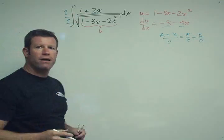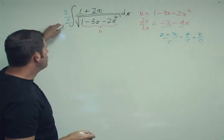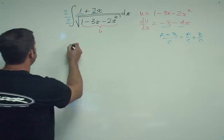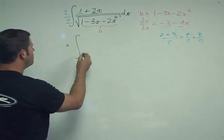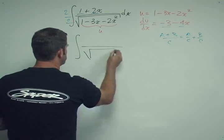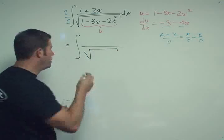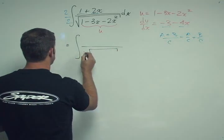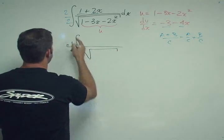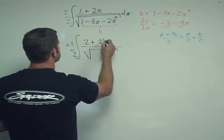So I'm going to multiply by 1, which takes the form in this case of 2 over 2. And what that gives me is the integral, the bottom doesn't change, right? The radical doesn't change. We just get a 2 here.